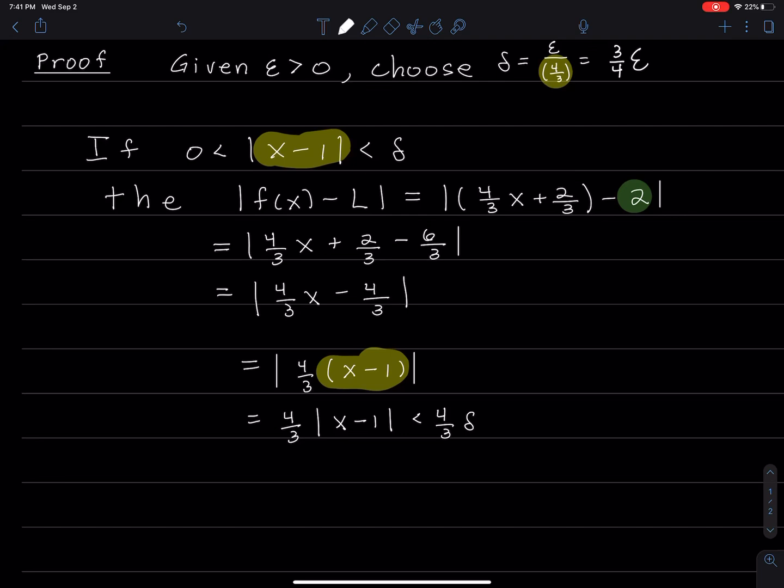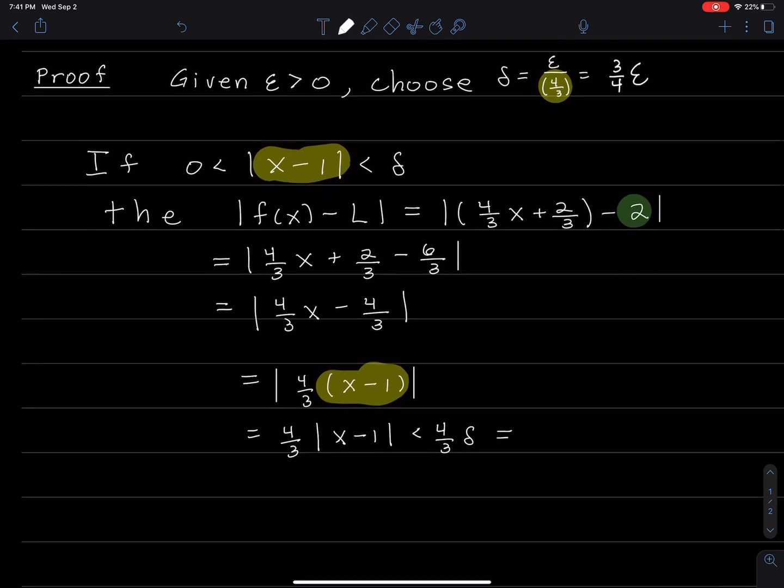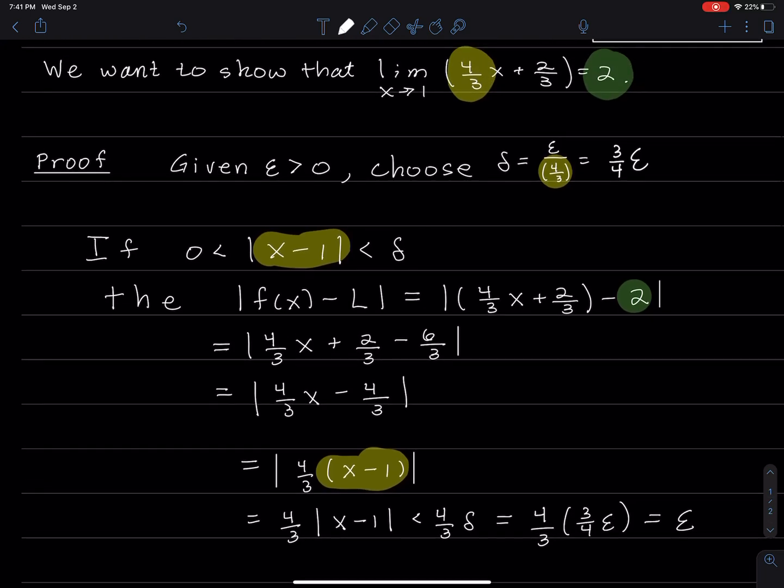Now, |x - 1| is less than delta. So if I multiply |x - 1| by 4/3, then I'm going to get less than (4/3)δ. I'm also going to use the other assumption that delta is (3/4)ε. And then, it's at this point that I can see why I chose delta the way I did, because 4/3 times 3/4 makes 1, so this makes epsilon. And that is proving the limit is 2.